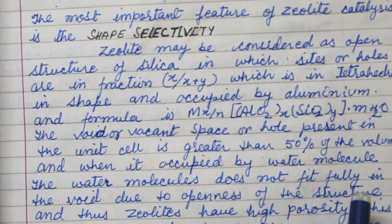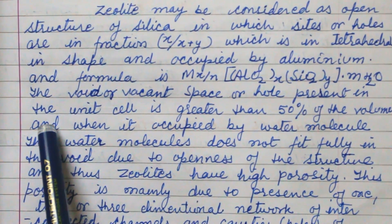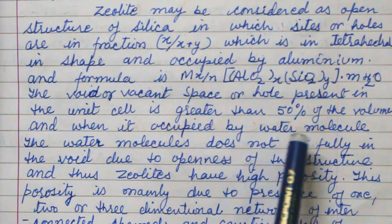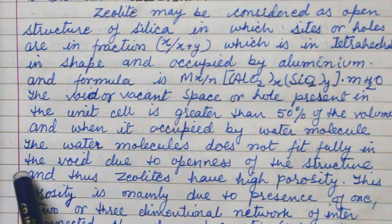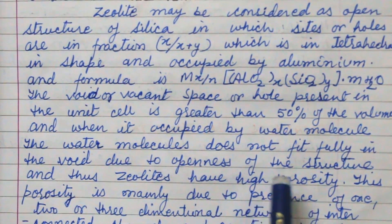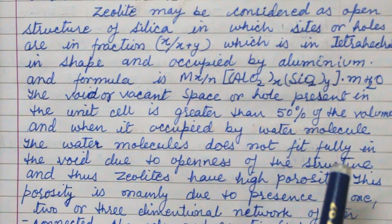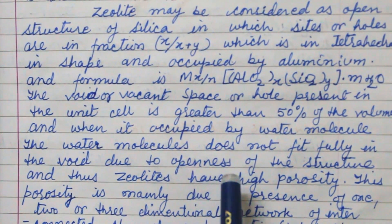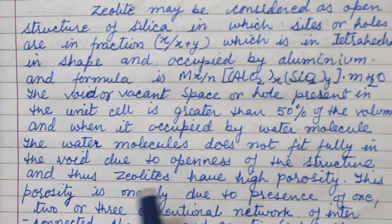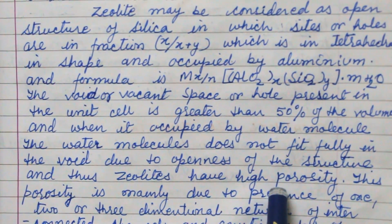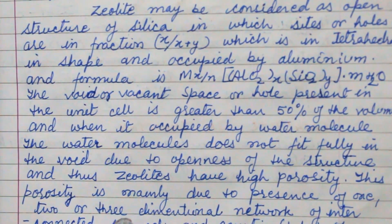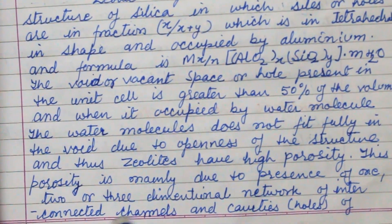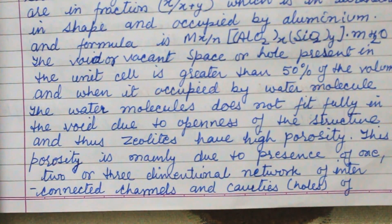The void and vacant space or holes present in the unit cell is greater than 50 percent of volume. When occupied by water molecules, the water molecules do not fit fully in the void due to the openness of the structure — because zeolite has an open structure, more water molecules do not fit fully in it, and thus zeolite has high porosity.